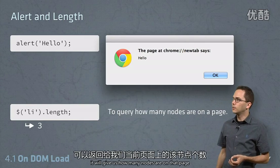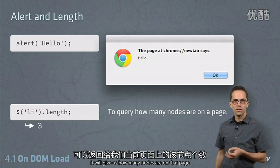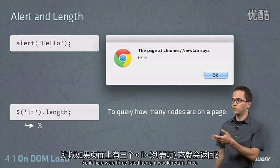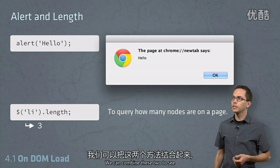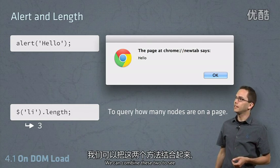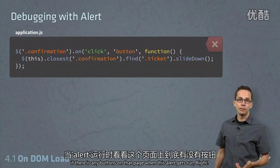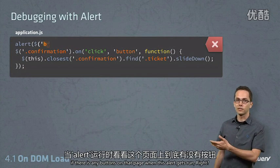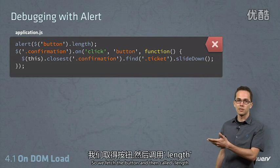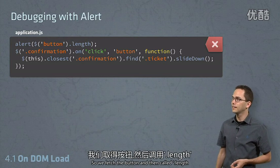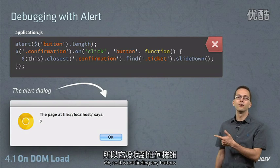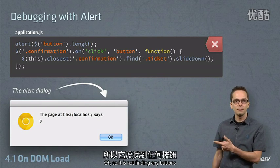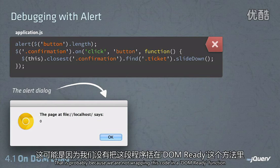Another useful thing to know about debugging is if we fetch a DOM element using jQuery and call .length on it, it will give us how many nodes are on that page. So if there were three list items, it would return three. We can combine these two to see if there are any buttons on the page when this alert gets run. So we fetch the buttons and call .length — and what we find is that it's zero. So it's not finding any buttons.